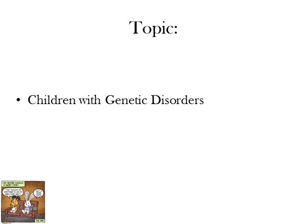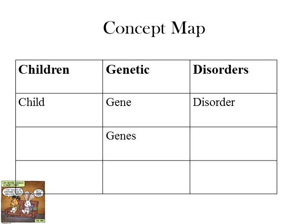Here's an example: I want to find documents on children with genetic disorders. So I set up what we call a concept map. This is a very simple one — I'm not using any truncation or the other things we'll talk about later. I have a concept called 'children' and I ask myself what other words might be used: child, kid, infant, baby. For simplicity I'll leave it at 'children' and 'child'. The second concept is 'genetic' — we could also use 'gene' or 'genes'. And for 'disorders' I might also use the singular 'disorder'.